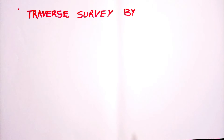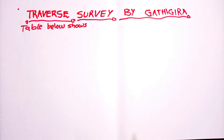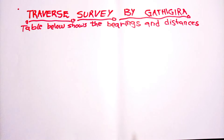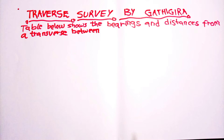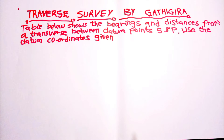Welcome back. Today we are going to deal with traversing calculation using the Bowditch method. The table below shows the bearings and distances from a traverse between datum points S and P. Using the datum coordinates given in Table 2, we are going to compute the adjusted coordinates of the new points by the Bowditch method.